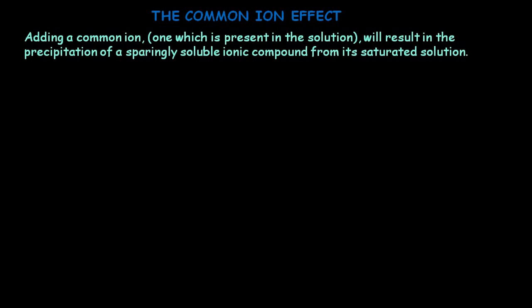Let's learn about the common ion effect. In our earlier video, we had learnt about the solubility product. Now let's see what is the common ion effect. It is the adding of a common ion — one which is already present in the saturated solution. Adding a common ion to such a solution will result in the precipitation of a sparingly soluble ionic compound from its saturated solution.